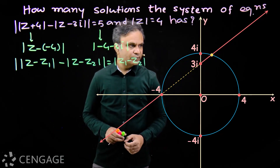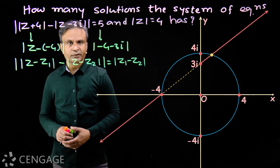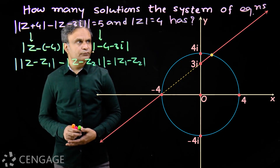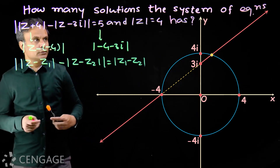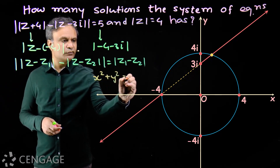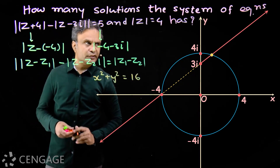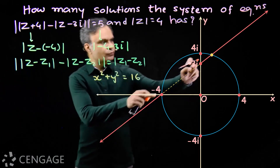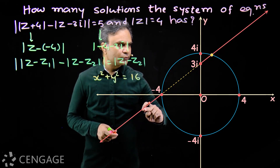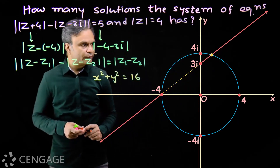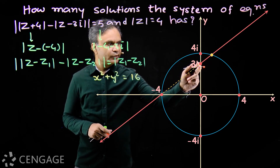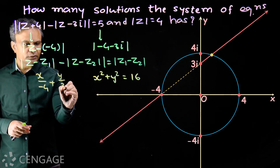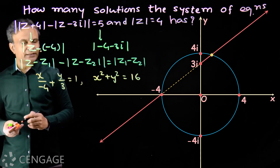To find this point of intersection it will be a bit difficult to solve the equations in complex number form, so we use Cartesian equations. The circle equation becomes x² + y² = 16, putting z = x + iy. For the two rays, we get the equation of the line passing through points minus 4 comma 0 and 0 comma 3. Using intercept form, the equation of the line is x over minus 4 plus y over 3 equals 1.